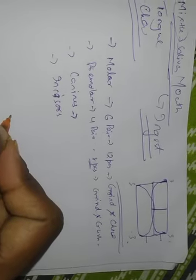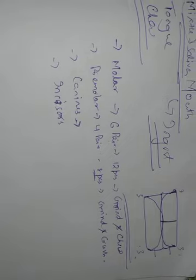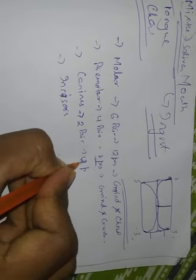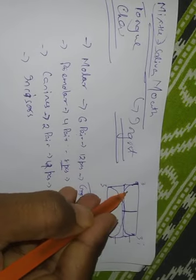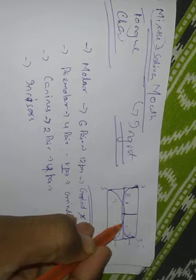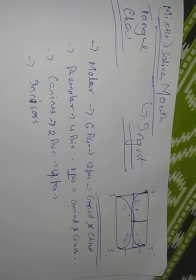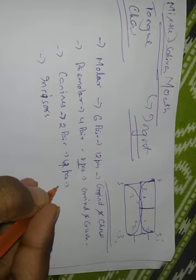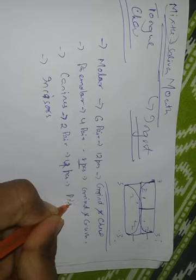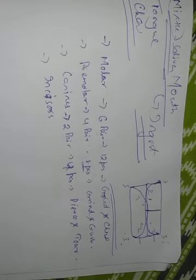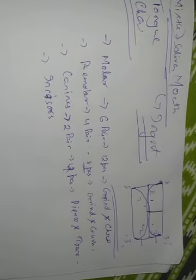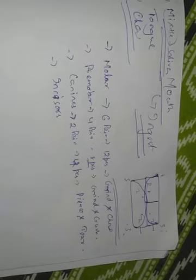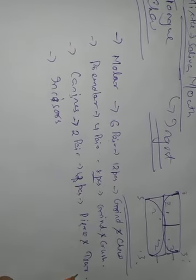Next are canines - you might have heard about these, they are the pointed teeth. They are at the edges. They are called canines and there are 2 pairs, meaning 4 pieces in our whole set. In the lower jaw there are 2 - one on the right and one on the left - and in the upper jaw there are 2. Their main function, because they are pointed, is to pierce and tear - to make a hole and tear apart, similar to how a snake pierces and tears.